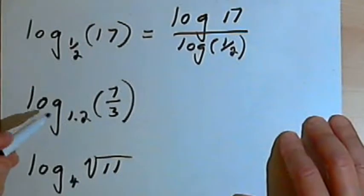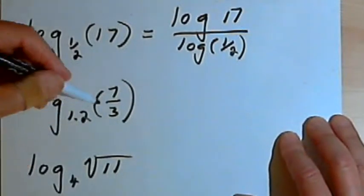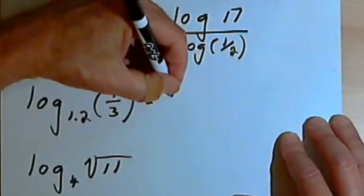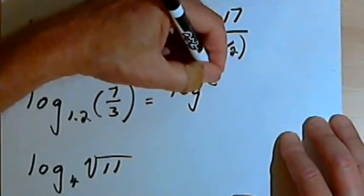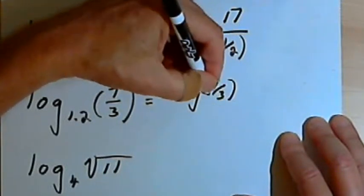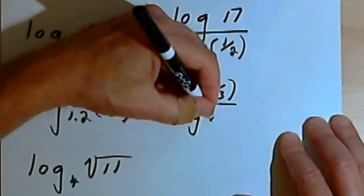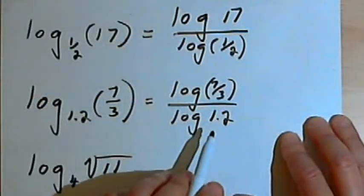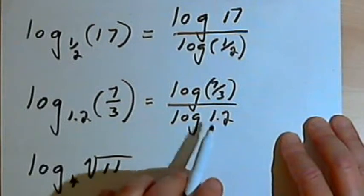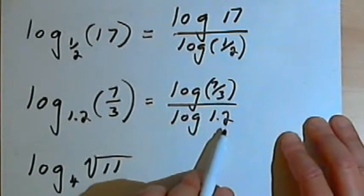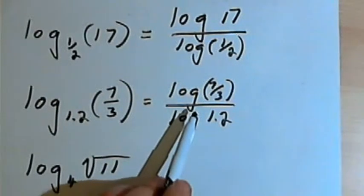Next I've got the log of 1.2, log base 1.2 of 7/3. So that's going to become the log of 7/3 divided by the log of 1.2. And once again I could put that in my calculator as the log of 7/3 divided by the log of 1.2 and get my decimal approximation for this number.